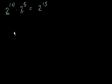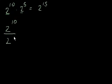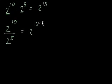We also learned that if it was 2 to the 10th over 2 to the 5th, we would actually subtract the exponents. So this would be 2 to the 10 minus 5, which equals 2 to the 5th.